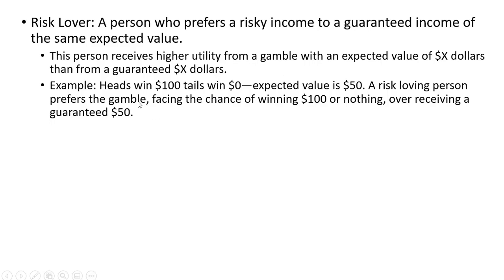As an example, say you flip a penny and if heads comes up you win a hundred dollars; if tails comes up you win nothing. The expected value of this gamble is fifty dollars — one half times a hundred plus one half times zero. A risk loving person prefers this gamble, facing the chance of winning a hundred dollars or nothing, over receiving a guaranteed fifty dollars.